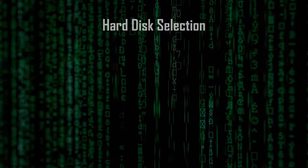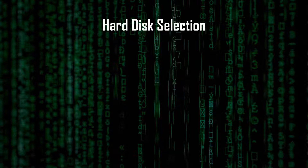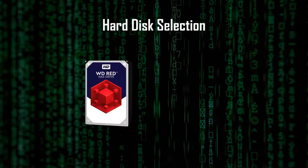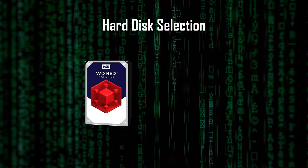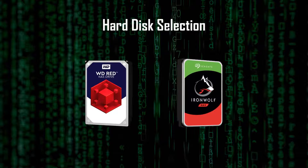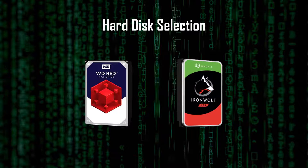For hard disks, when it comes to NAS, there are only two brands that come to mind — at least for me — because these are the most common and easy to get locally: Western Digital Red and Seagate IronWolf. Being a Western Digital user since the Raptor days, I never had any problems with this brand, from green, blue, and Raptor models. So why change now? Hence, I chose Western Digital Red.